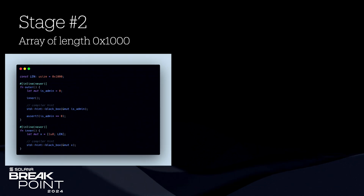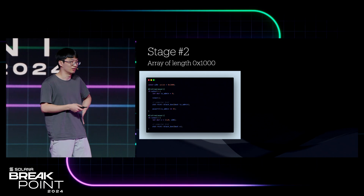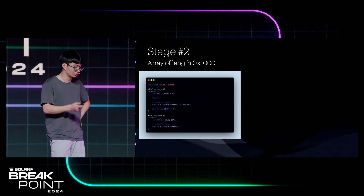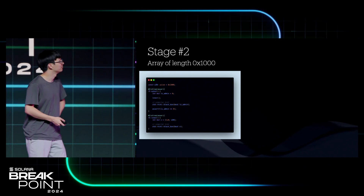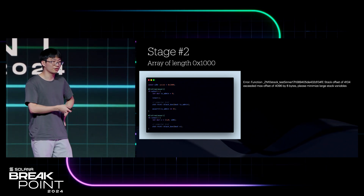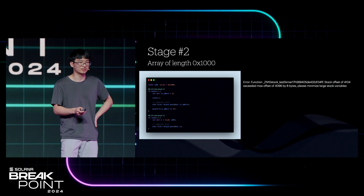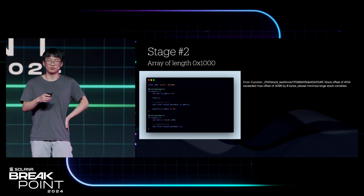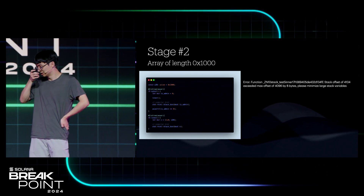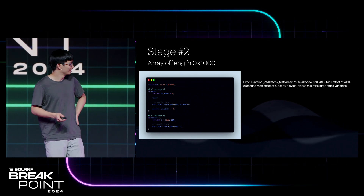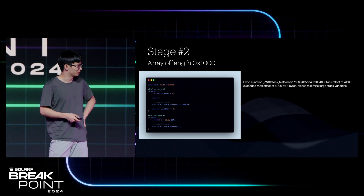What happens if you do it with an array of length 4,096, or 0x1000? For those who don't know, stack frames in Solana are this size — each time you do a function call, you have up to 0x1000 bytes of stack space available. You'll notice that when you compile this, there is a compiler warning. Importantly, this is a warning, not an error. So if you don't look too carefully at your compilation logs, you can end up ignoring this. If you're a developer, maybe you should check if you have any warnings when you're compiling your programs.